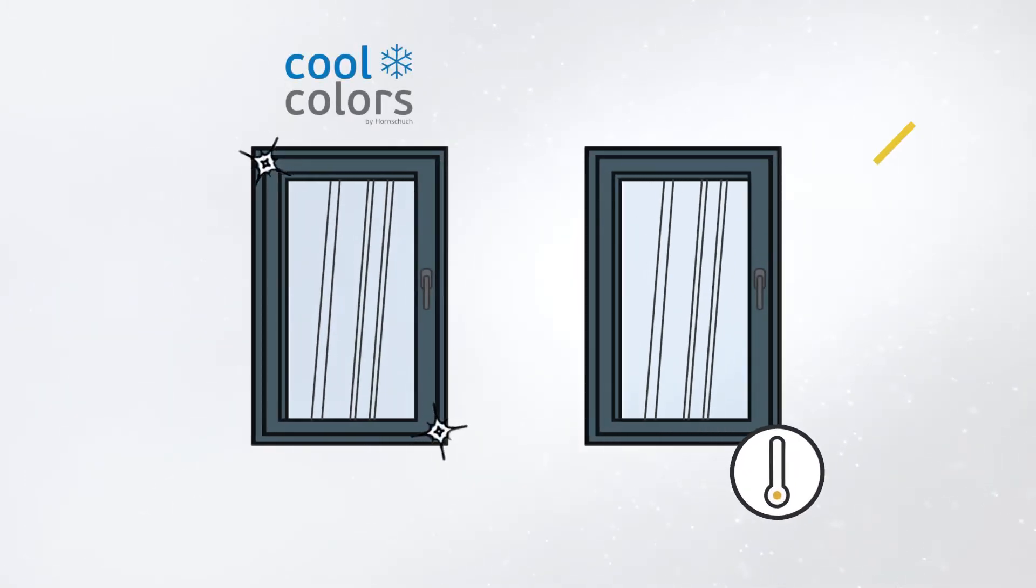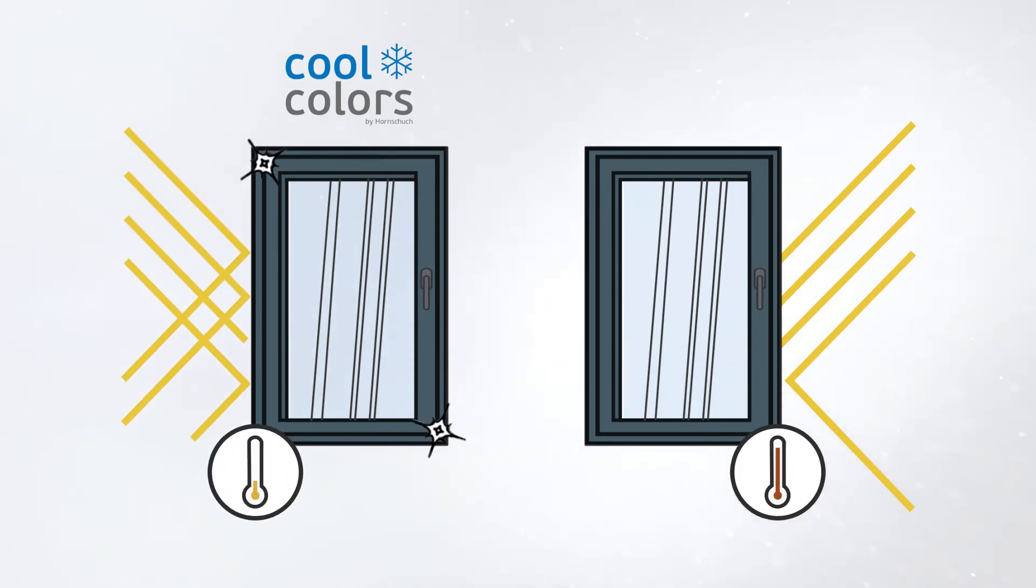While conventional window profiles absorb most of the solar radiation and heat up as a result, the Cool Colors foil reflects up to 80% of the near-infrared range in sunlight. This keeps the windows significantly cooler.